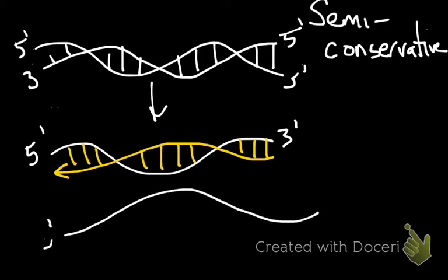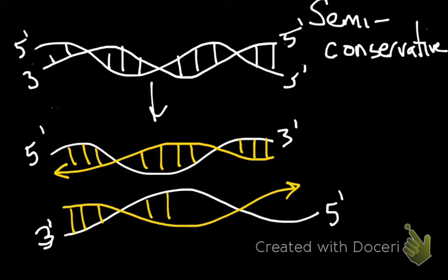So if this is our 3' one, our 5' end here, then our new strand again is going to be made in the 5' to 3' direction of that newly synthesized DNA.